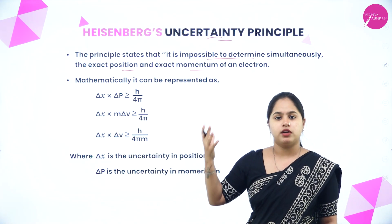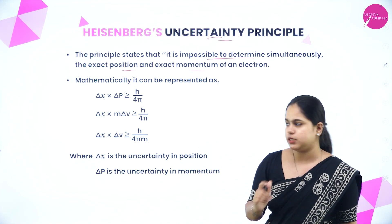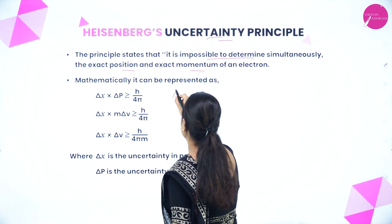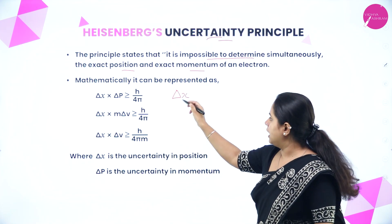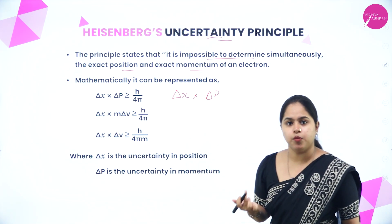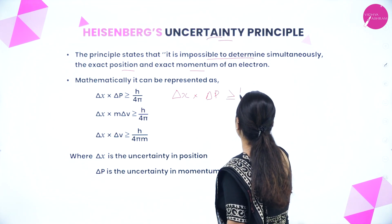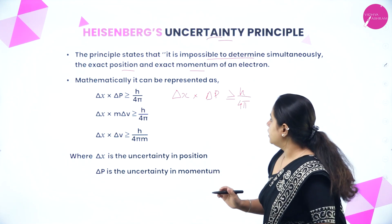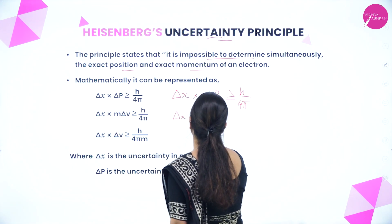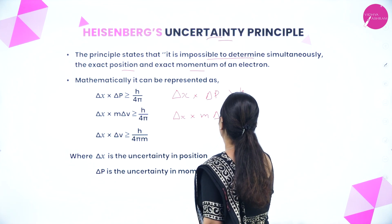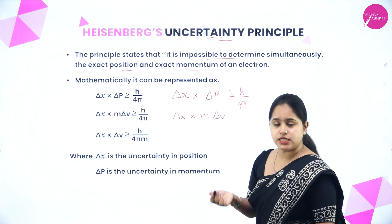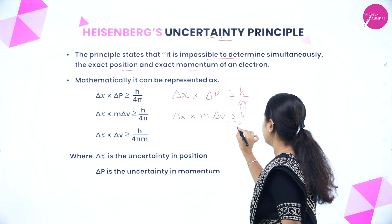Heisenberg formulated an equation: delta x times delta p is greater than or equal to h/4pi. Delta x is the uncertainty in position and delta p is the uncertainty in momentum. Since momentum equals mass times velocity, this can also be written as delta x times m times delta v ≥ h/4pi, where mass is constant.